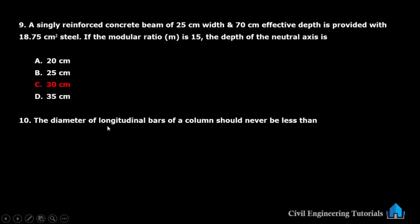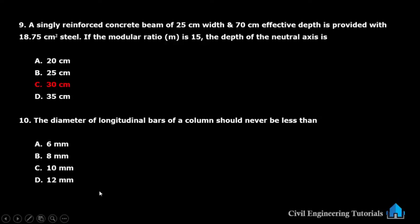The diameter of longitudinal bars of a column should never be less than — option A: 6 mm, option B: 8 mm, option C: 10 mm, option D: 12 mm. The answer is option D — the diameter of longitudinal bars of a column should never be less than 12 mm.